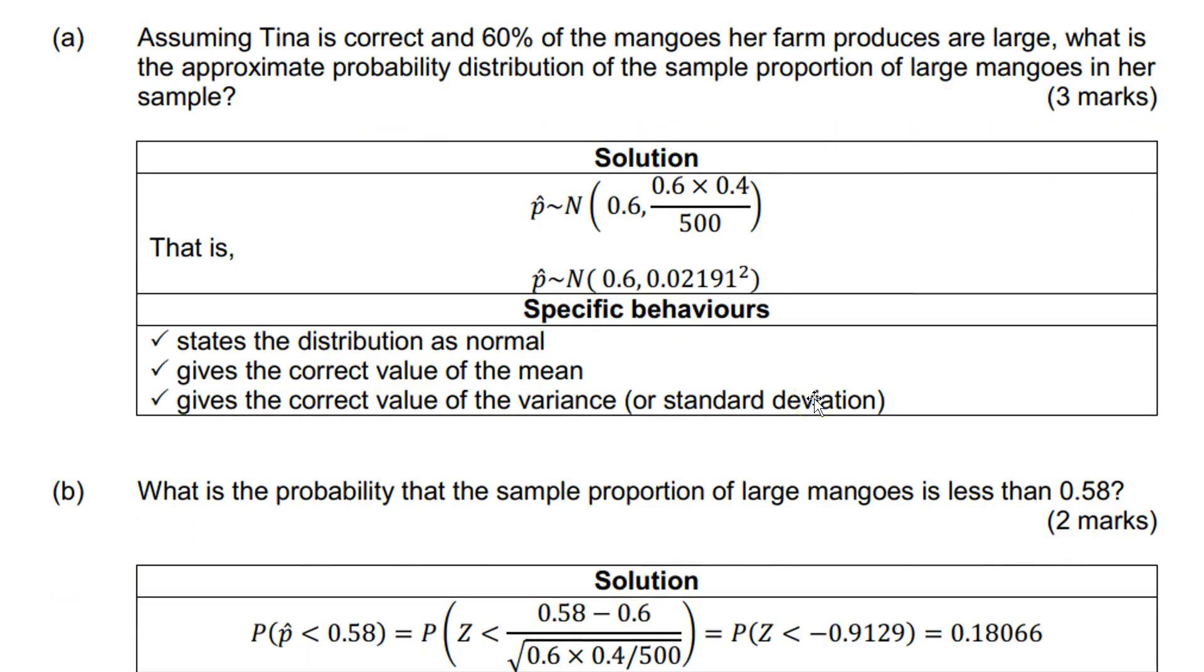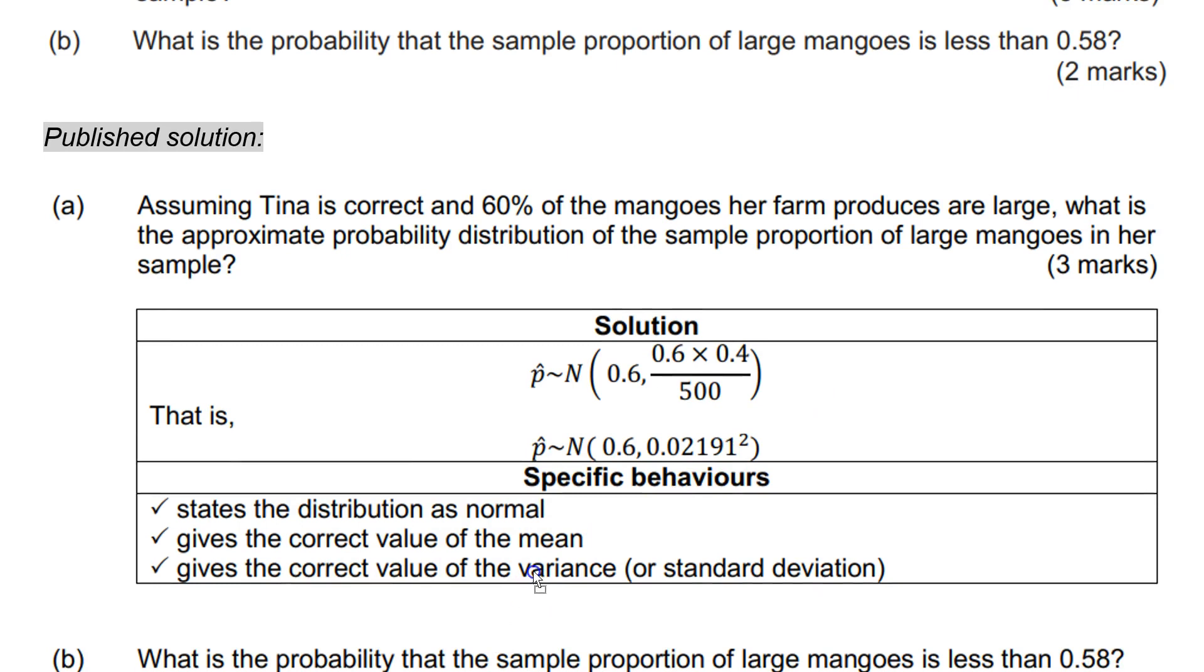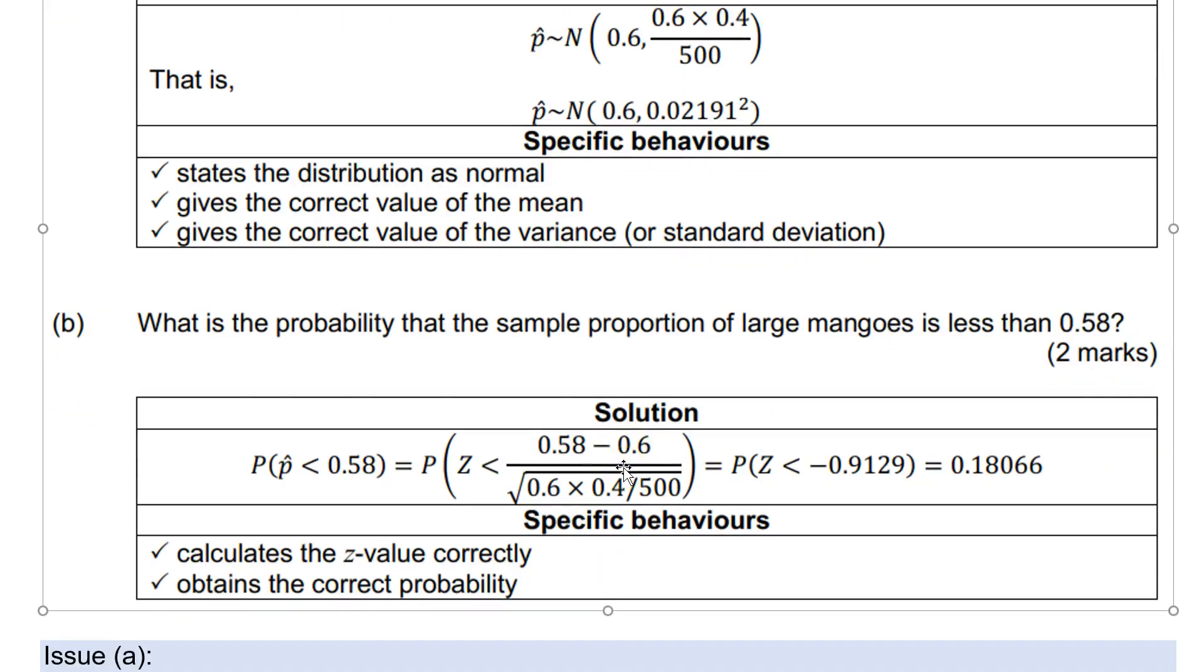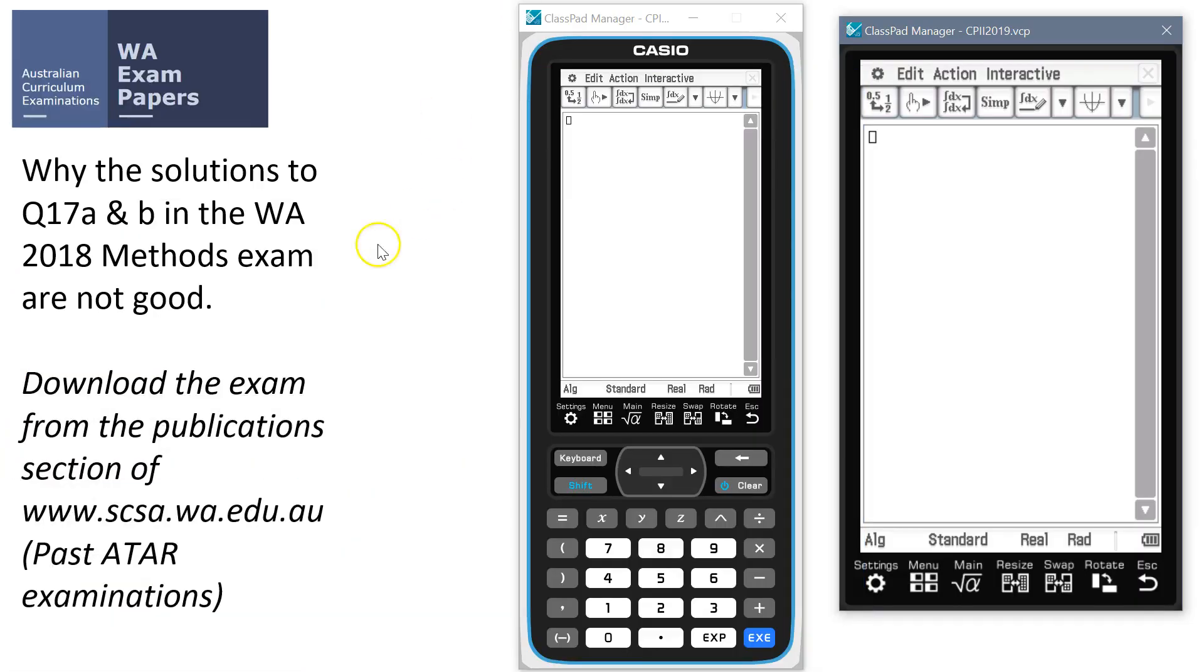Part B then asked, what's the probability that the sample proportion of large mangoes is less than 0.58? And then they carried on and used the normal approximation here to come up with a probability of 0.18066. Okay, so let's see maybe what they should have done. So here we go. And that's the wrong answer, by the way.